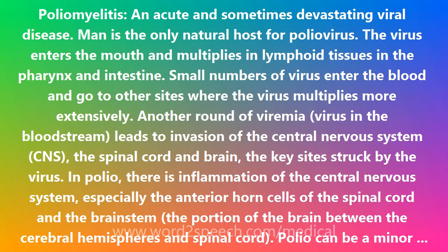Man is the only natural host for poliovirus. The virus enters the mouth and multiplies in lymphoid tissues in the pharynx and intestine. Small numbers of virus enter the blood and go to other sites where the virus multiplies more extensively. Another round of viremia — virus in the bloodstream — leads to invasion of the central nervous system, CNS, the spinal cord and brain, the key sites struck by the virus.